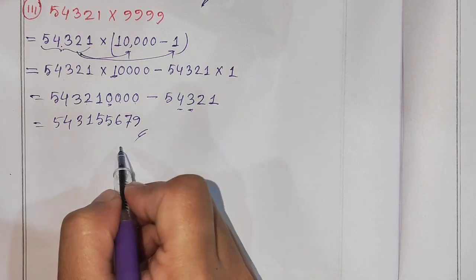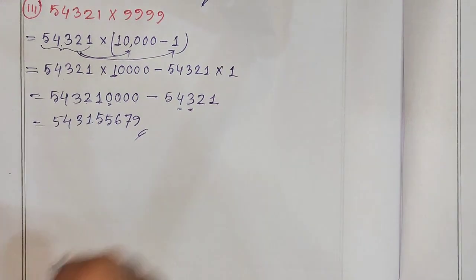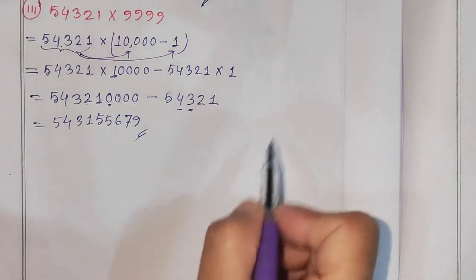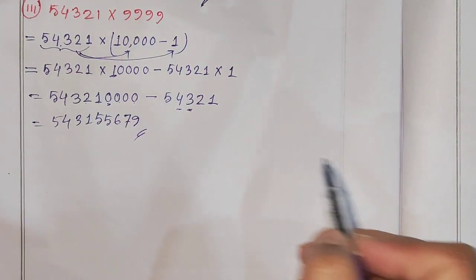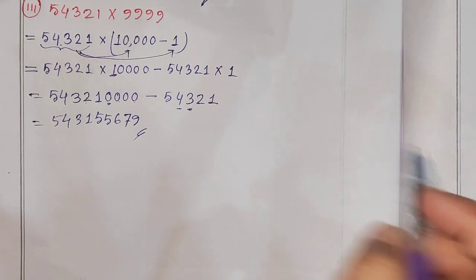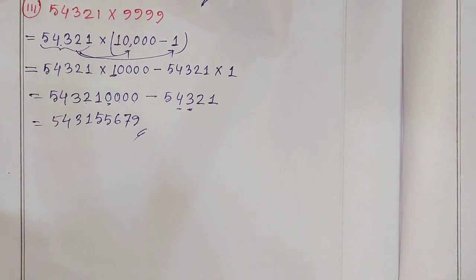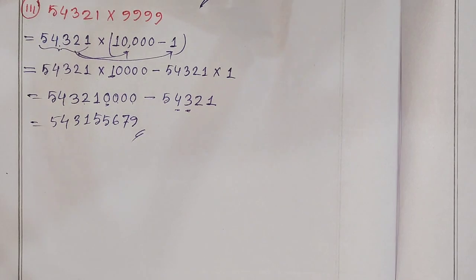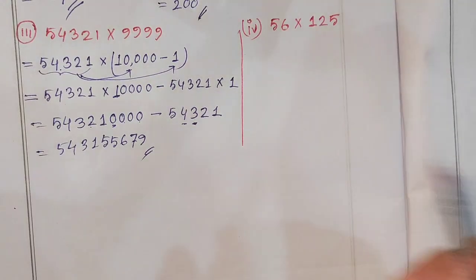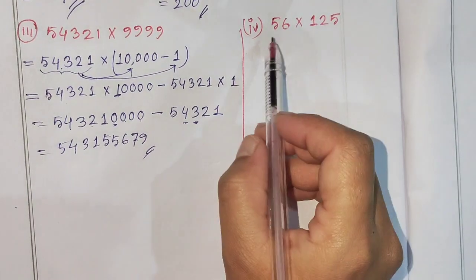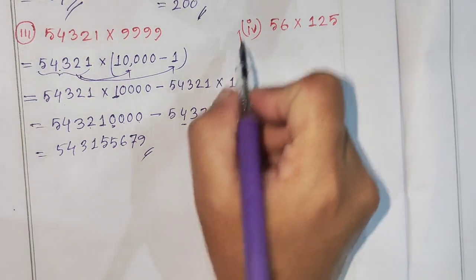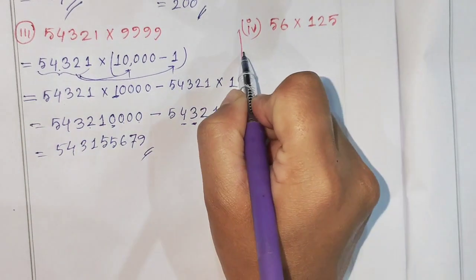We have to answer this answer. Next, question number 4. How do we do 56 into 125? That is 125 into 56.